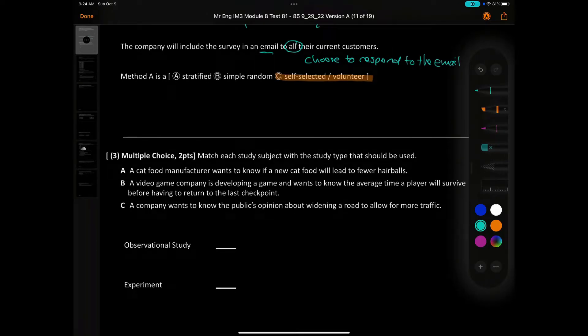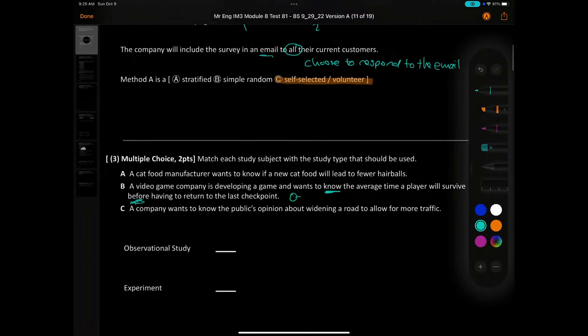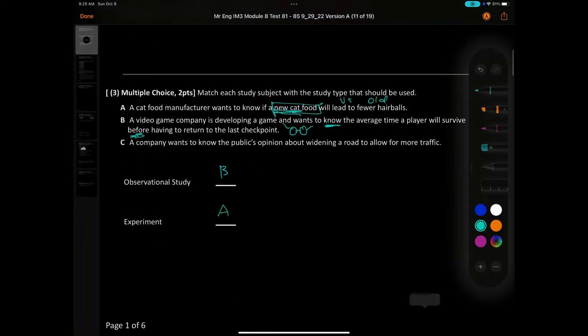Question number 3. Match each study subject with a study type that should be used. We're looking for the one that has an observation. Now this one's a little bit confusing, the video game one, because it says before having to return to the checkpoint. But you're not doing anything to these players, you're just watching. So observational study is B. Which one's an experiment that puts them in two groups and then does something to them? I'm thinking this one would be because you have the new cat food versus the old cat food. Based on those two, which one would bring more hairballs?